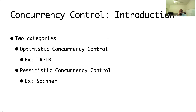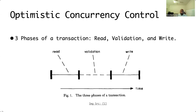Morty draws comparison with other systems based on their choice of concurrency control. Concurrency control can be broadly categorized into two camps: optimistic concurrency control and pessimistic concurrency control. An example of pessimistic concurrency control is Spanner. Let's go a little deeper into these two types of systems, as they will be used for comparison later by the paper.